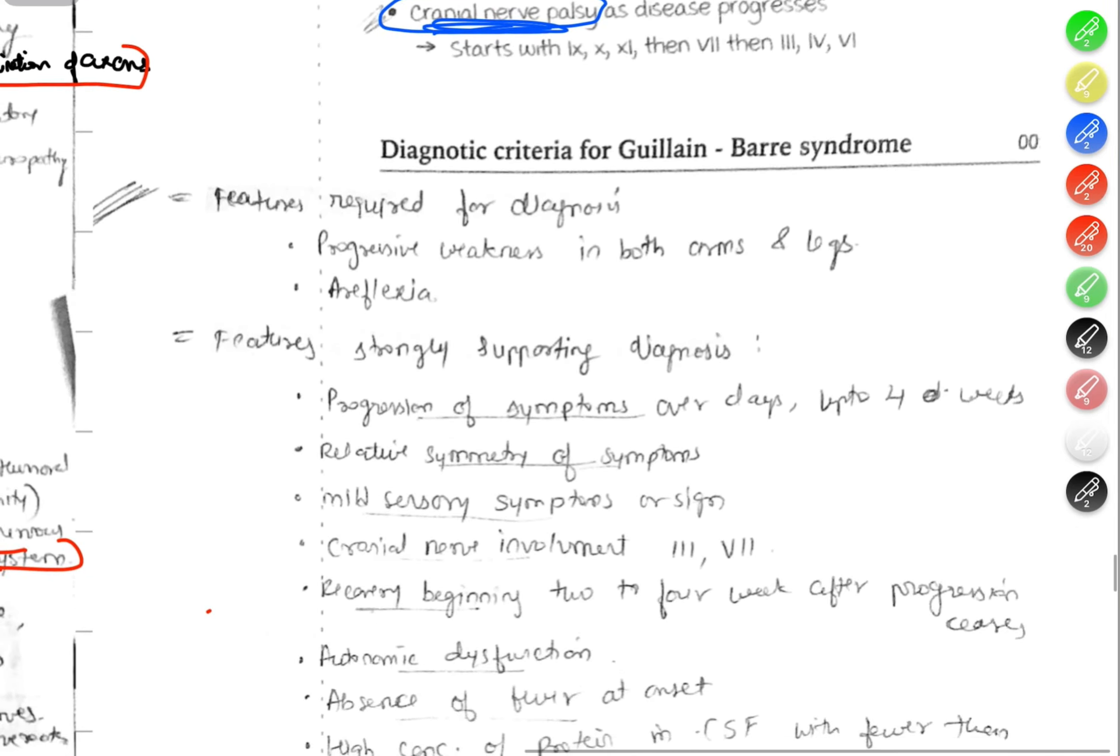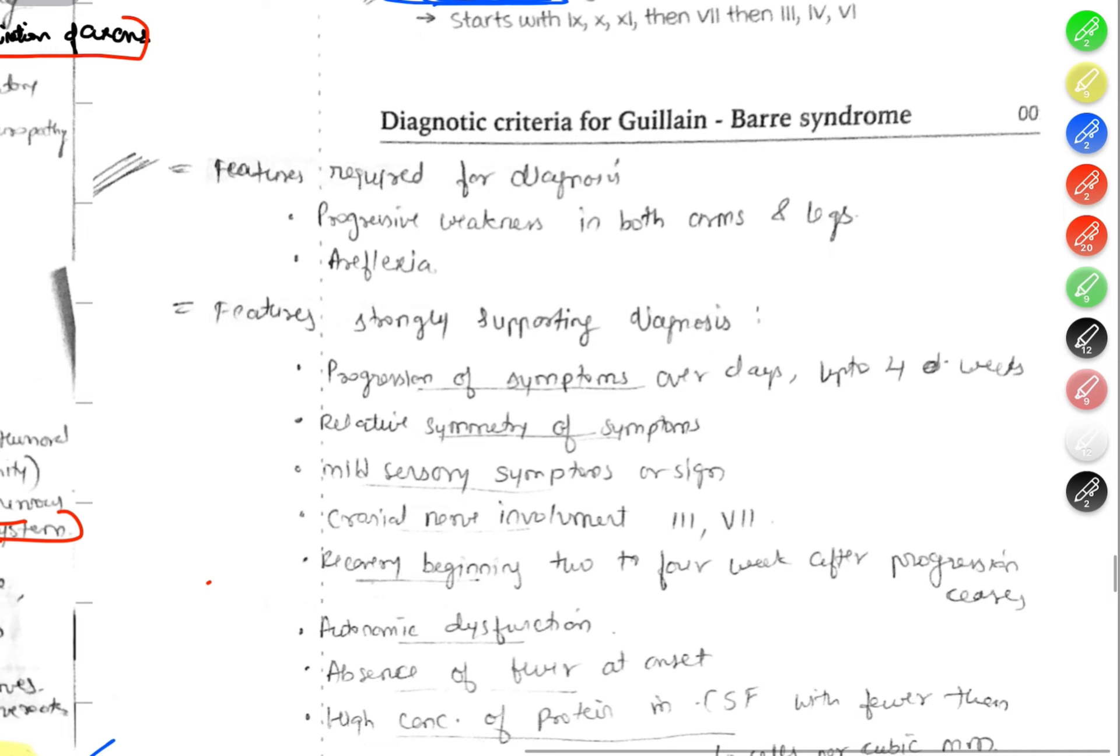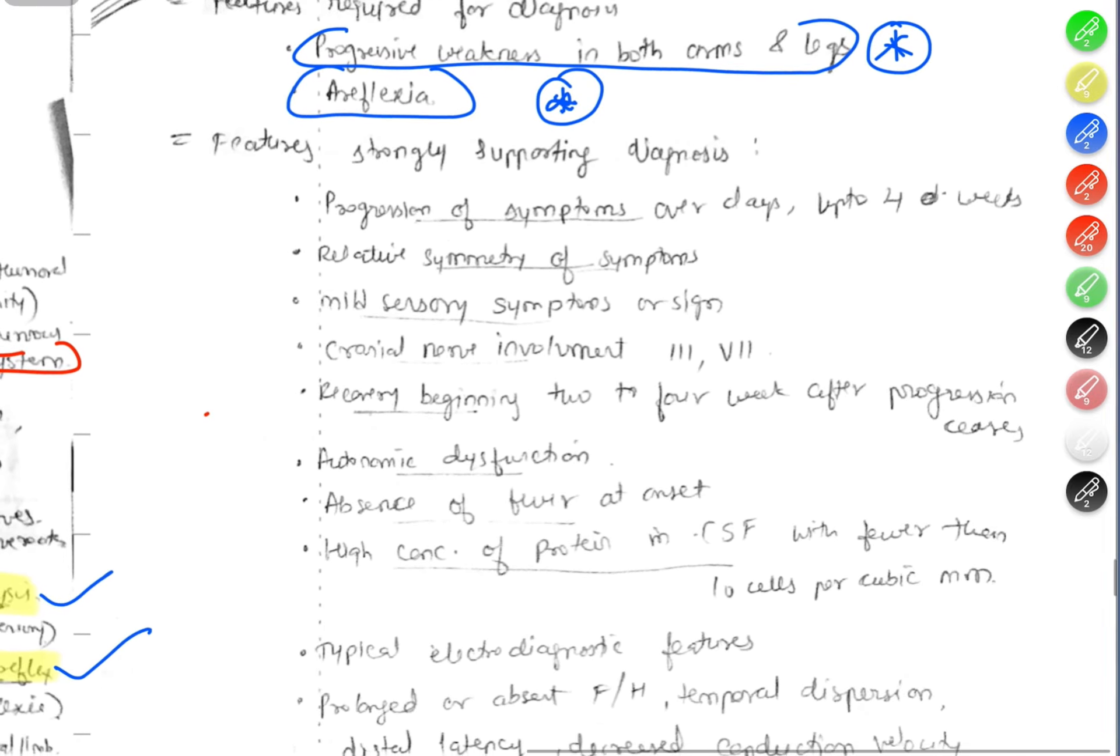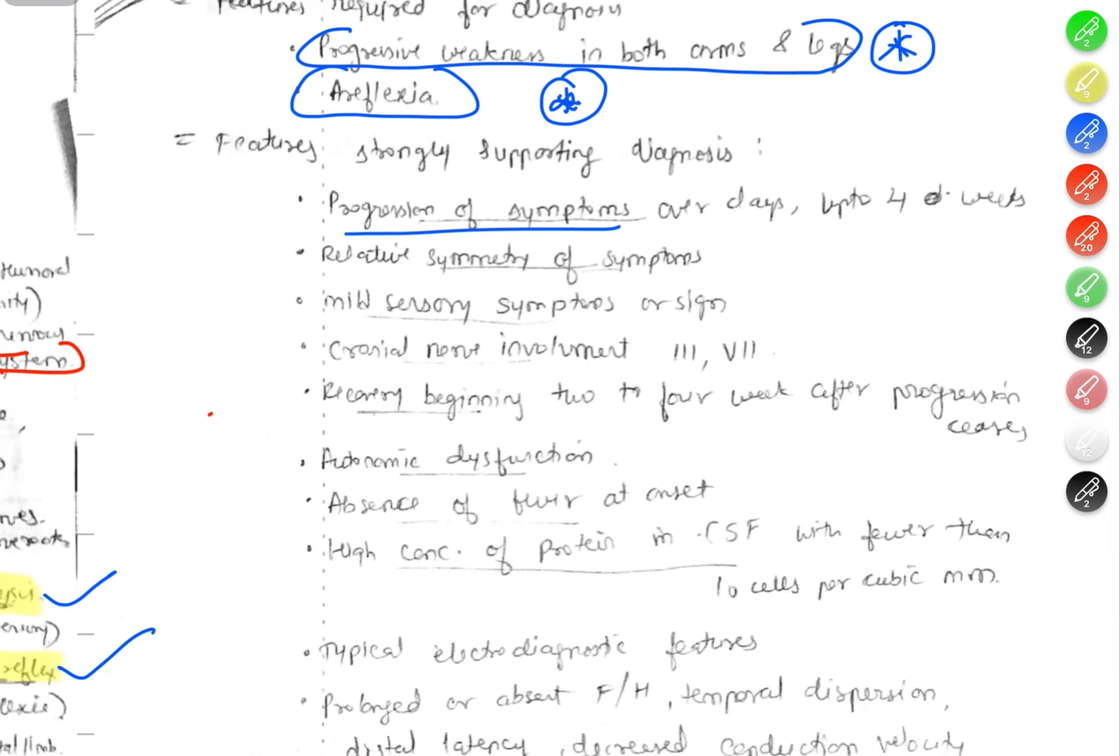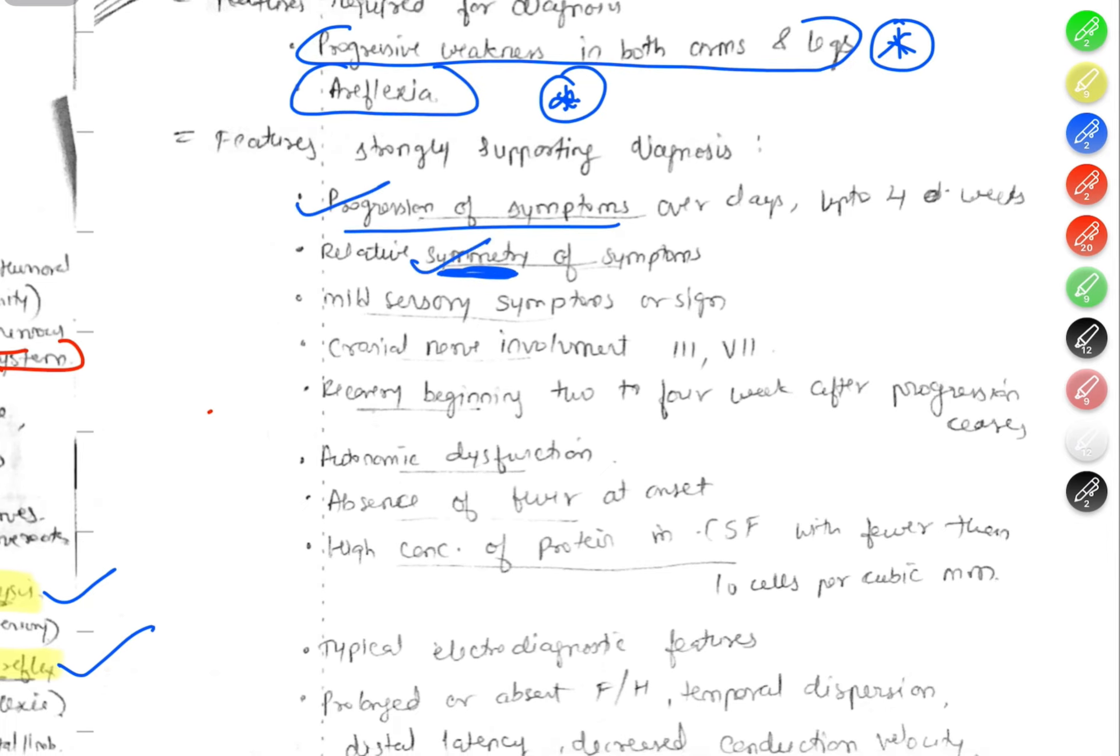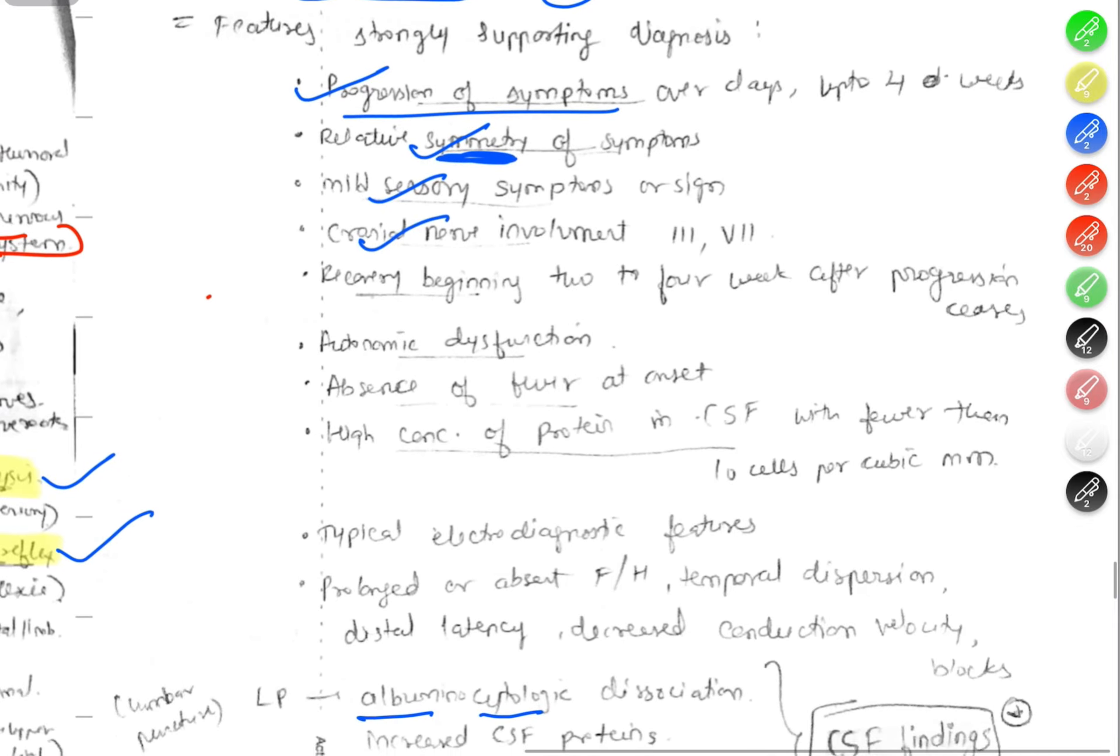Diagnostic criteria for Guillain-Barré syndrome: features required for diagnosis are progressive weakness in both arms and legs and areflexia. Supporting features include progression of symptoms, relative symmetry, sensory involvement but late, cranial nerve involvement, autonomic dysfunction, and absence of fever.